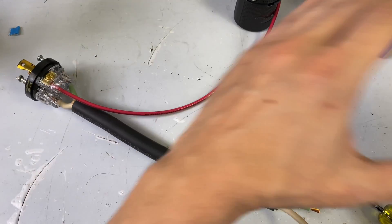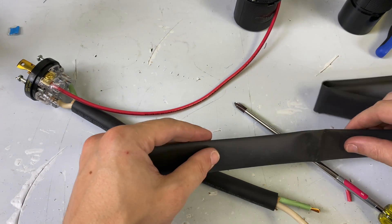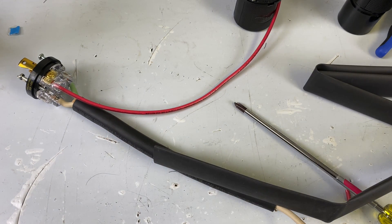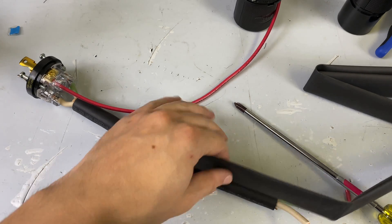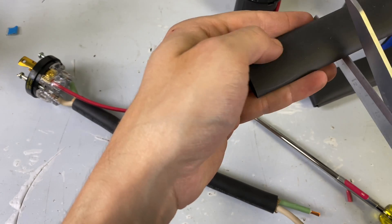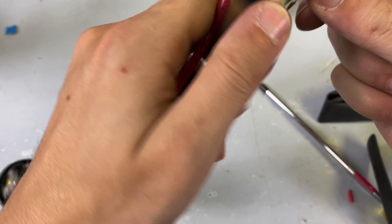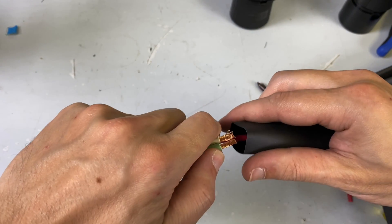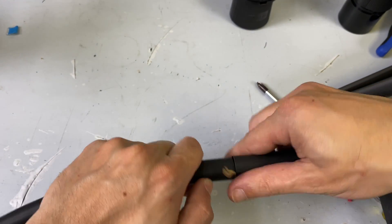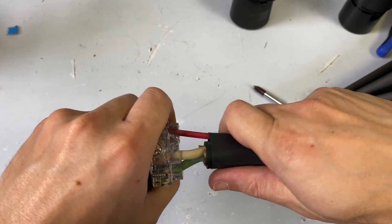I'm going to take a piece of heat shrink because it wouldn't be a Billy video if we didn't have heat shrink. My scissors are, of course, in my work box. So let's just cut this guy down. We're going to put our heat shrink over here, just like that.